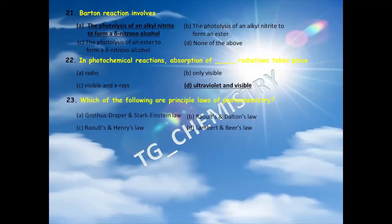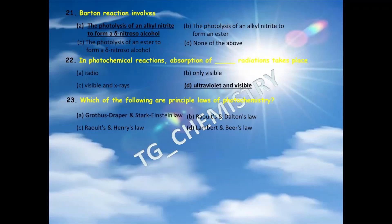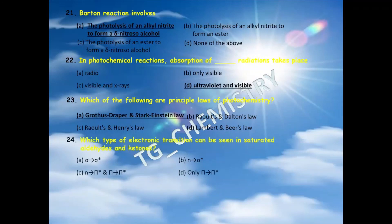Twenty-third question: which of the following are the principal laws of photochemistry? Options: A) Grotthuss-Draper and Stark-Einstein law, B) Raoult's and Dalton's law, C) Raoult's and Henry's law, D) Lambert-Beer's law. The answer is option A — the Grotthuss-Draper and Stark-Einstein laws are the basic principles of photochemistry.